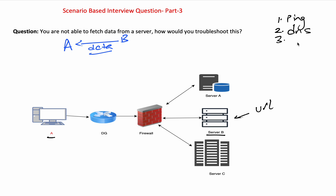On client A itself, you will check the client configuration — correct IP address, subnet mask, default gateway, and DNS settings. This covers the first part: basic connectivity.